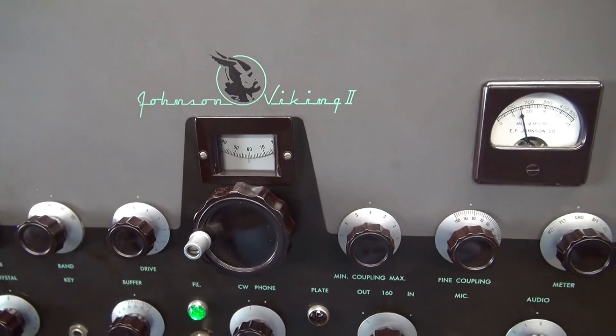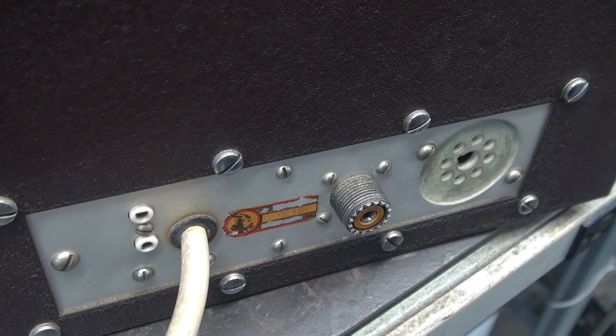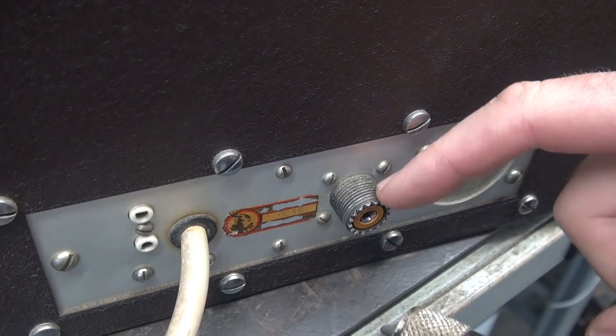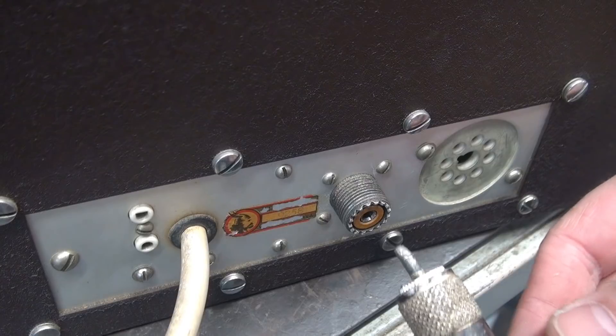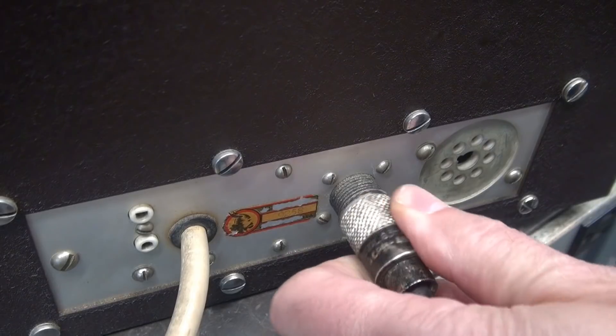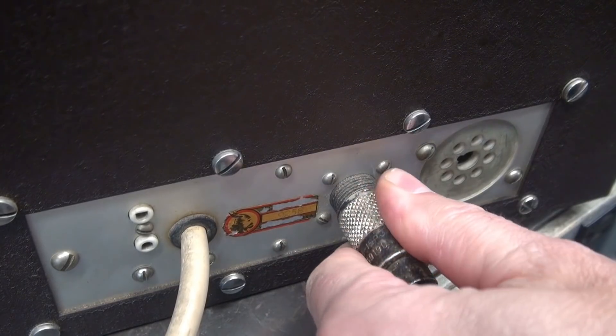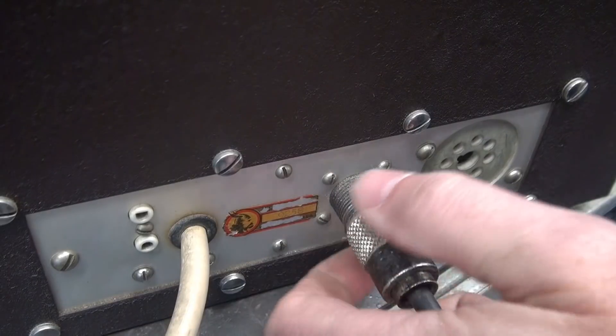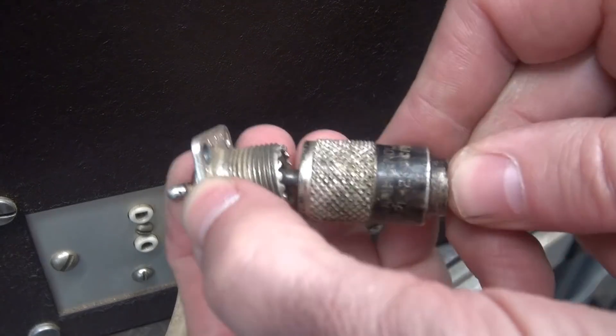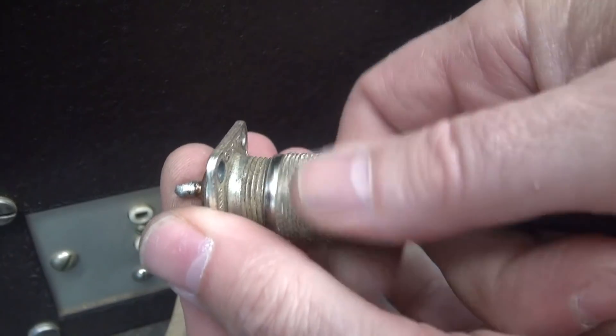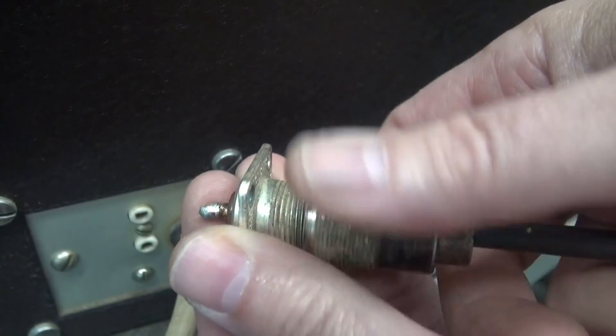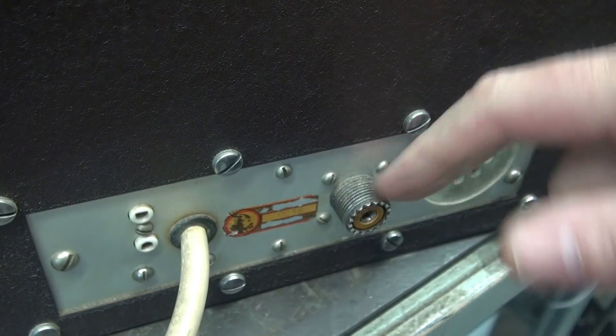Another common problem it seems with the VFO input on the Viking 2s is that the threads on this connector seem to become damaged. So you're plugging in a PL-259 and then the threads bind. I've seen this on quite a few of the Viking 2s. If you were to take another SO-239, same connector, she'll thread right on.